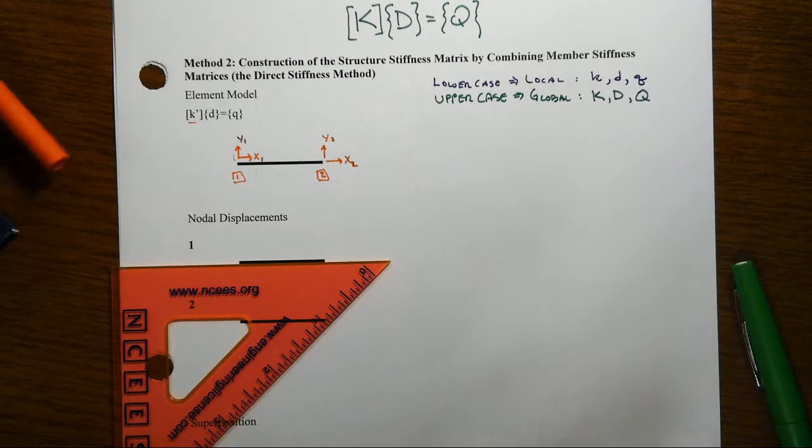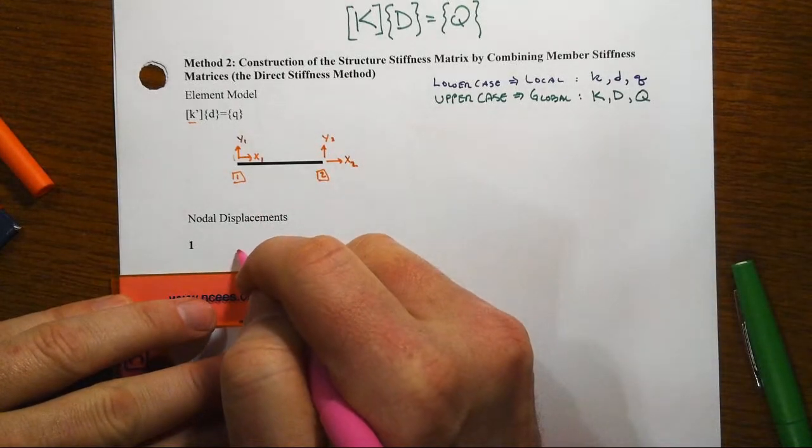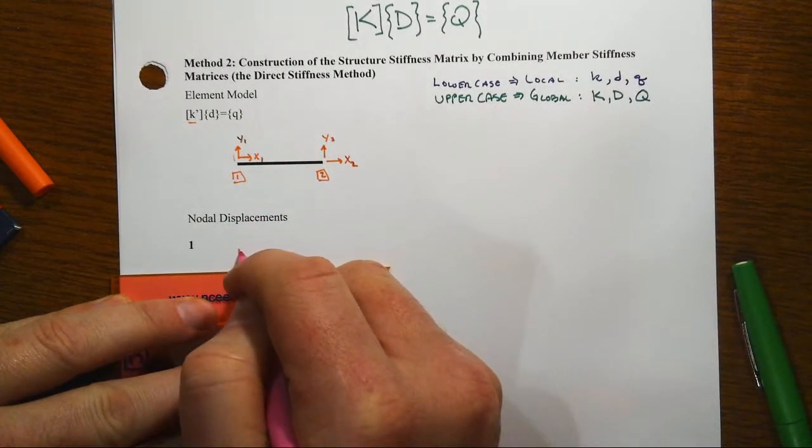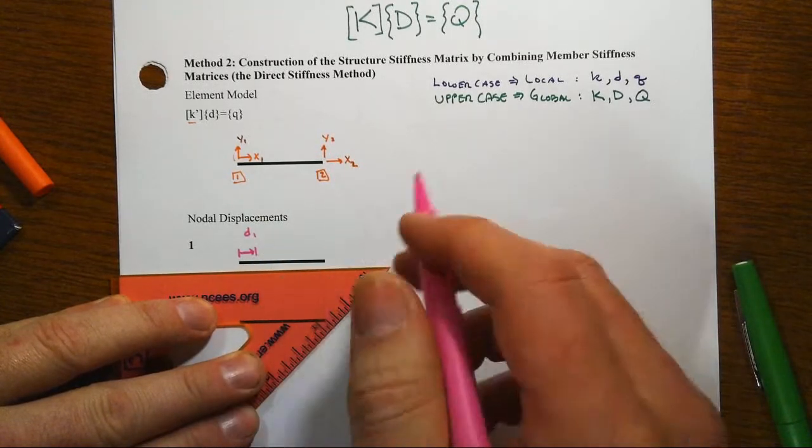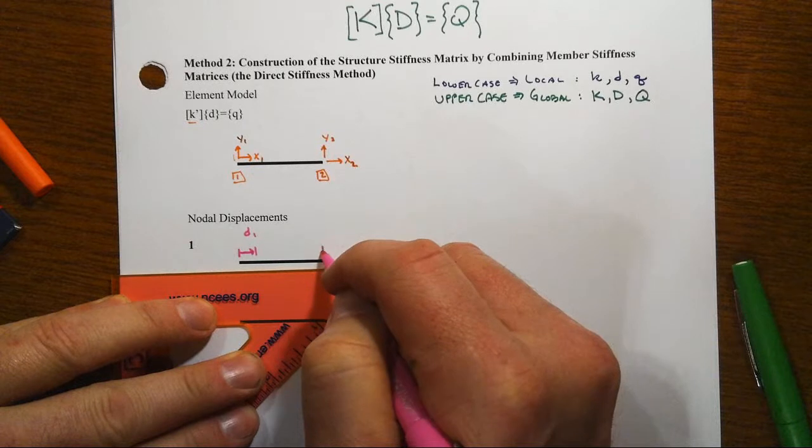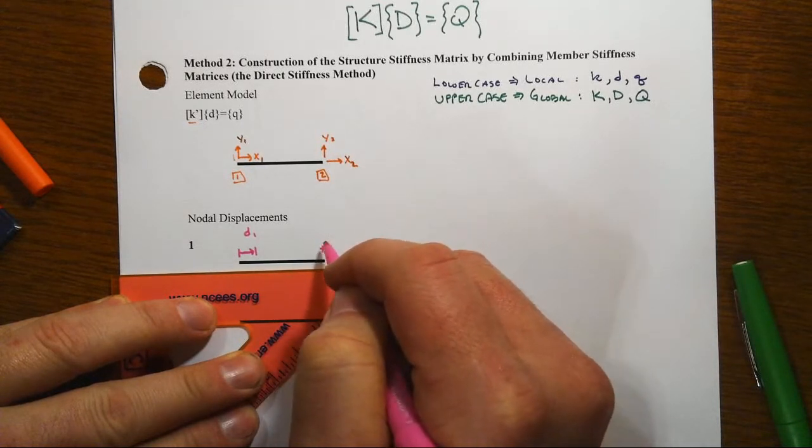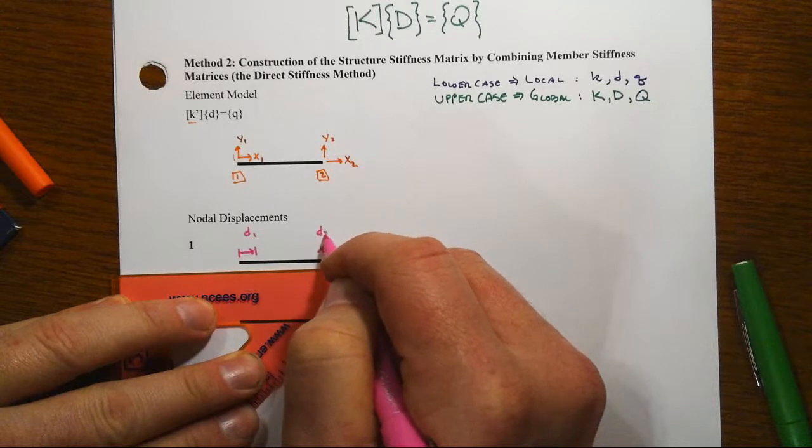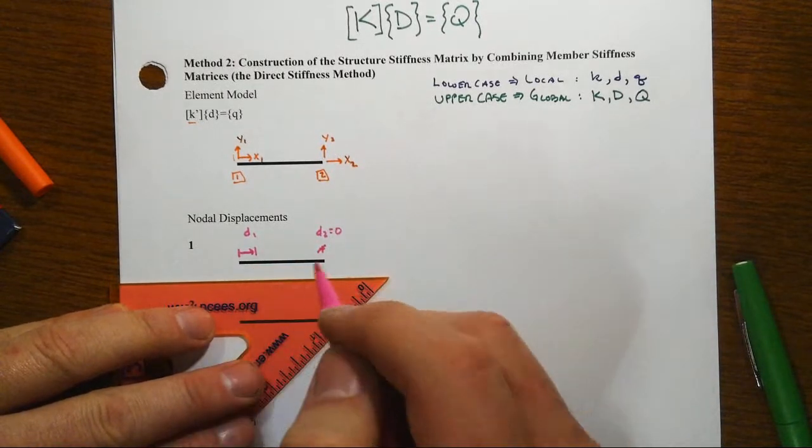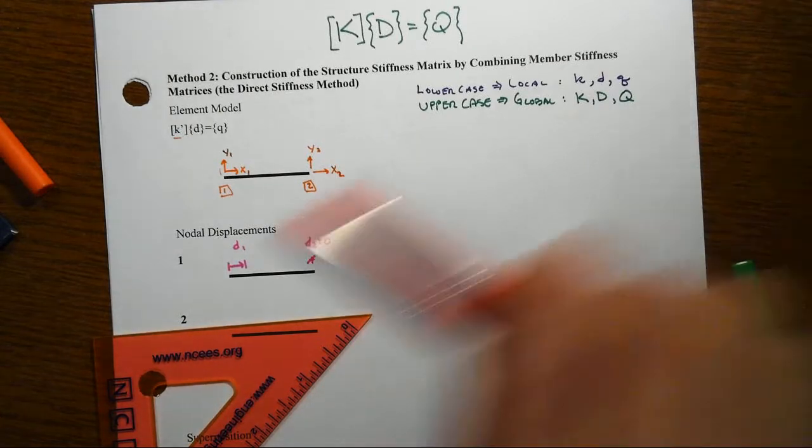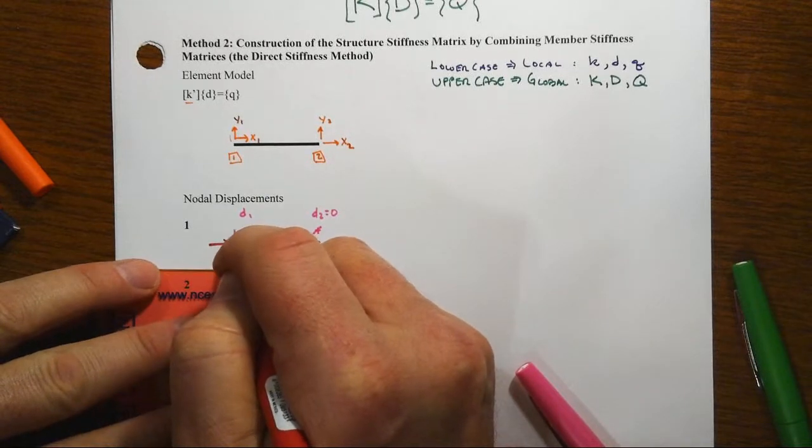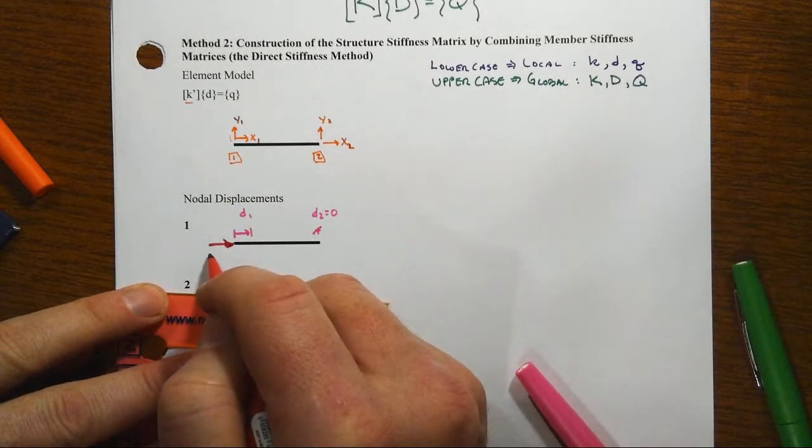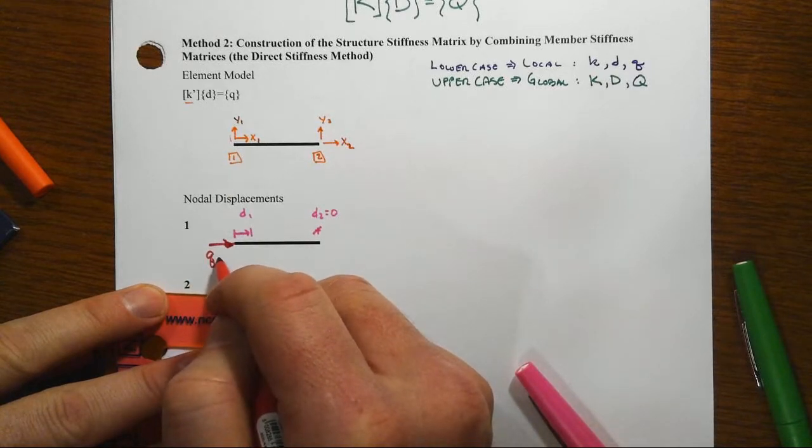So what that means is that we're going to impose for the node of displacements at one, the pattern that is as follows. We're going to put a displacement here at one. We'll use lowercase. And that's equal to a non-zero value. And at the second one, then we will have the zero for that one. So this member has shortened up. And in order for that to happen, we've had to come along and impose a force.